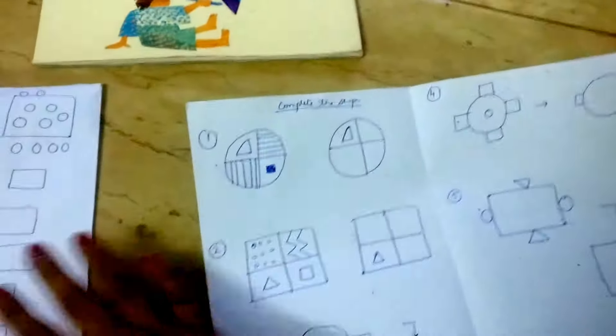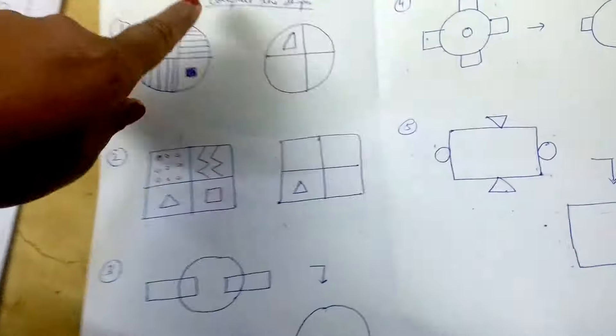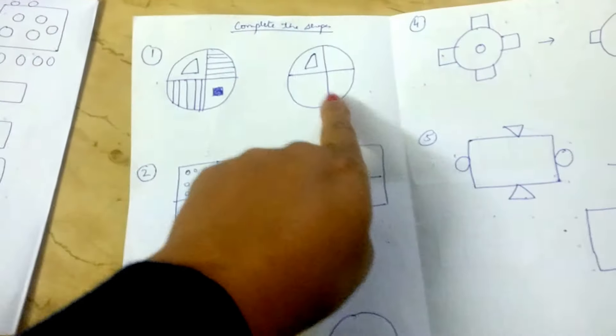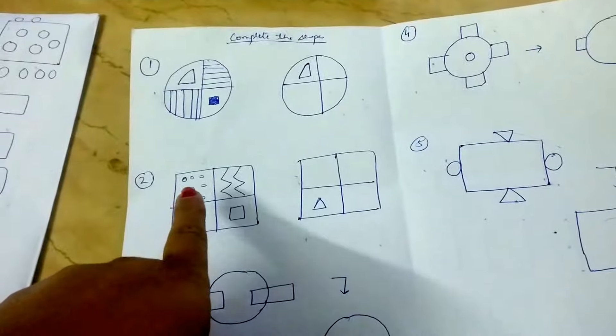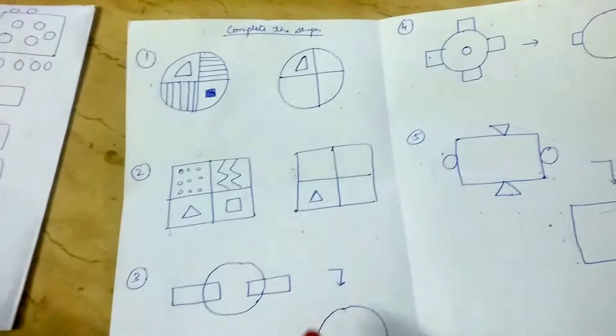This one is again a writing prompt. I have drawn one shape, she has to make the same shape here. It's like horizontal line, vertical line, a square with dots, zigzag, and the way the shape has to be completed.